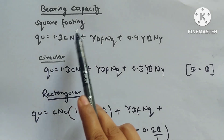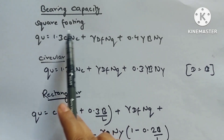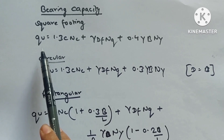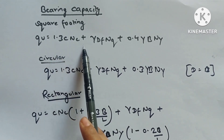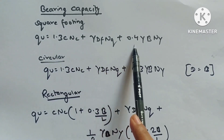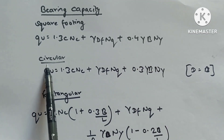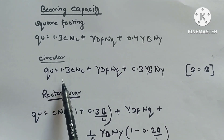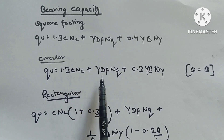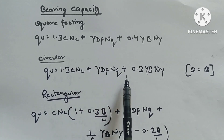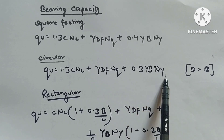Bearing capacity in foundation — Terzaghi's equations. For square footing: qu = 1.3cNc + γDfNq + 0.4γBNγ. For circular footing: qu = 1.3cNc + γDfNq + 0.3γBNγ.